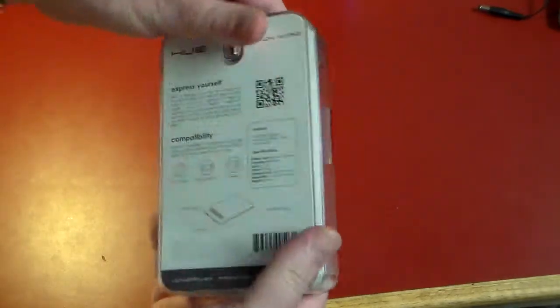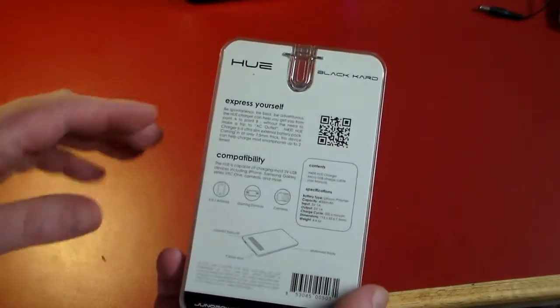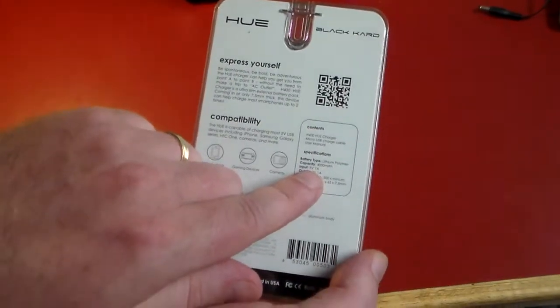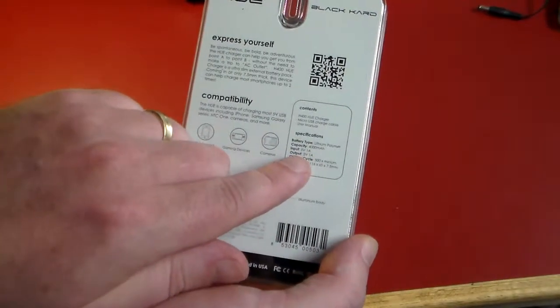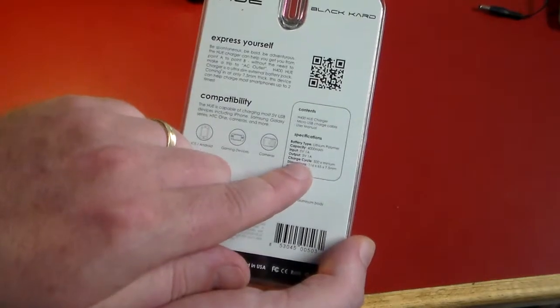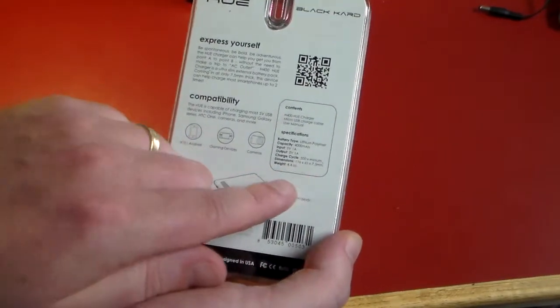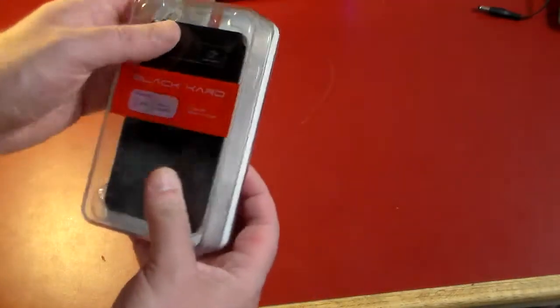I couldn't get over how thin this was, so I just had to pick it up and take a look at it. This is a 4000 milliamp, so very thin for 4000 milliamps. Five volt, one amp is the input, and same is the output - five volt, one amp. 7.5 millimeters thin, that's crazy thin.